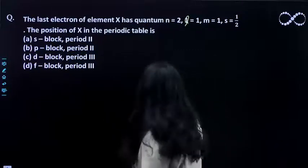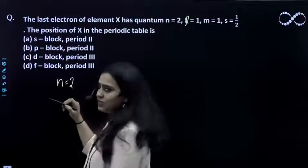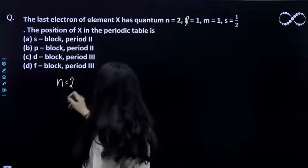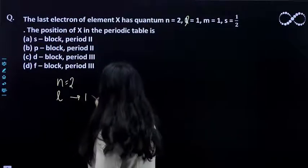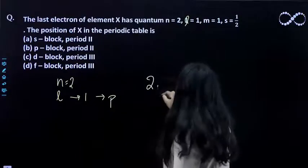You will have to write the configuration. n=2 means the last electron is in the second shell. l=1 means it is a p subshell, so it is in 2p.